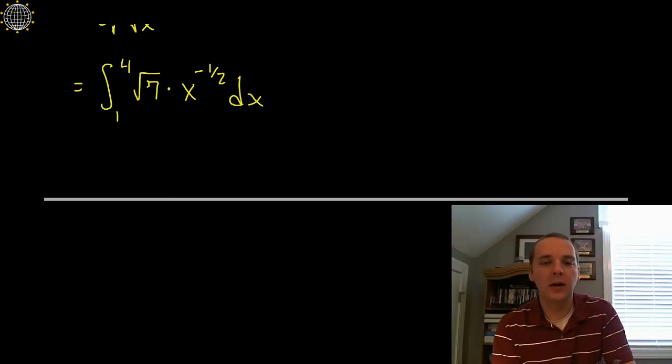So here we go. I'm going to take this guy's anti-derivative. The square root of seven will just kind of hang around for a little bit. But for the x to the minus one half I would add one to the exponent instead of subtract one like you would for a derivative. So we get x to the positive one half divided by one half with a bracket and a one and a four.